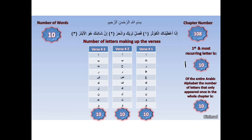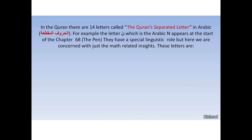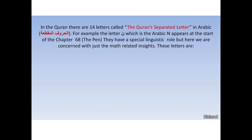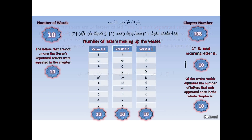In the Quran, there are fourteen letters called the Quran-separated letters — in Arabic al-Huruf al-Muqatta'a — and they are the letters that appear at the start of some chapters as verse number one. For example, the letter Nun appears at the start of chapter 68. These unique letters are: Alif, Ha, Ra, Sin, Saad, Ta, Ain, Qaf, Kaaf, Lam, Mim, Nun, Ha, and Ya. When we exclude these letters from the alphabet, what remains of letters within the alphabet appears within this chapter ten times.